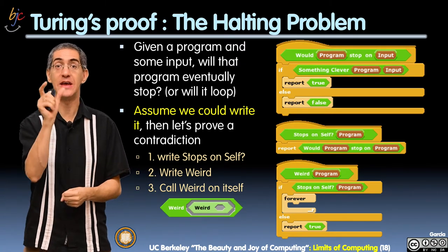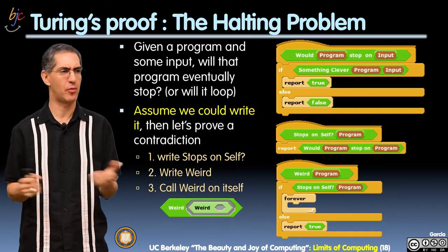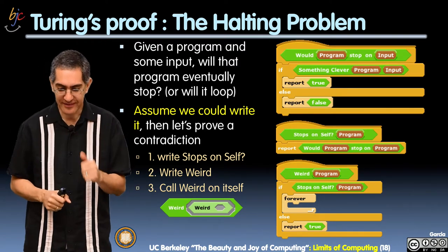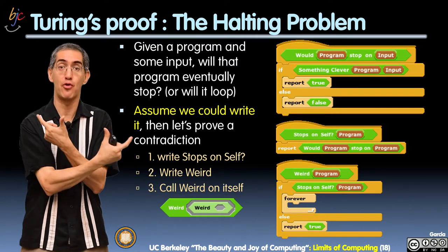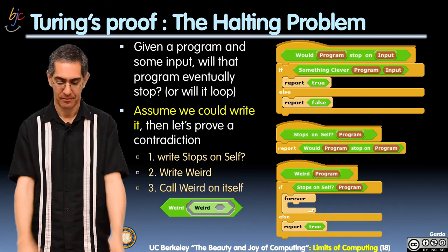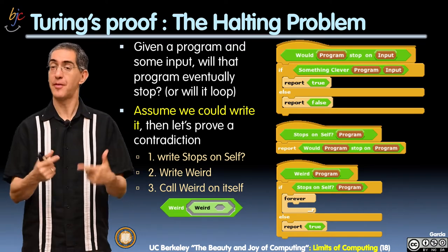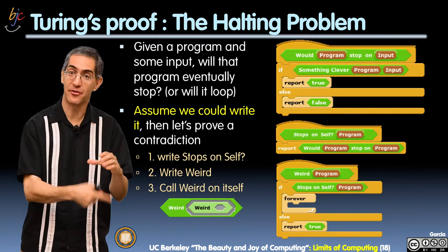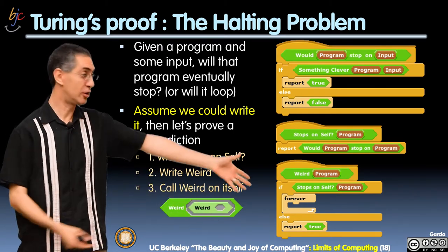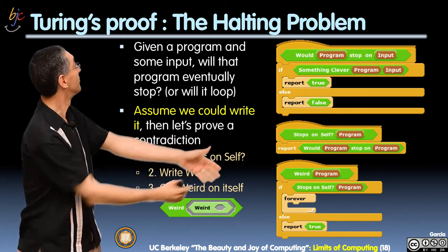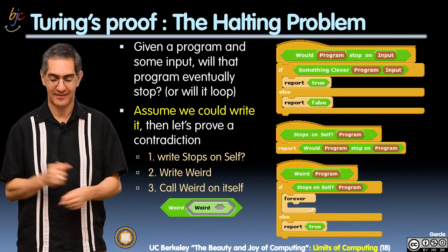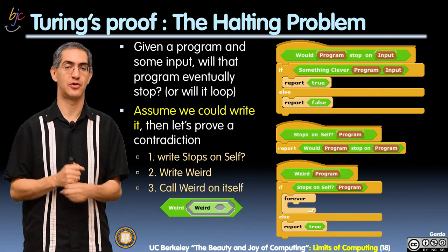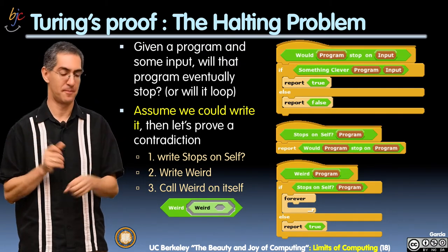Now, here is 'weird.' I'm going to write a program called weird. Watch weird. Weird has a program as input. If the program stops on itself, it runs forever — like the code says, look at the code. Otherwise, if it doesn't stop on itself, I return true.